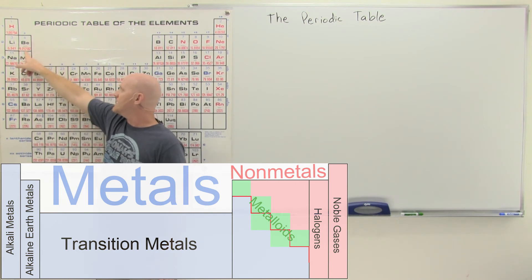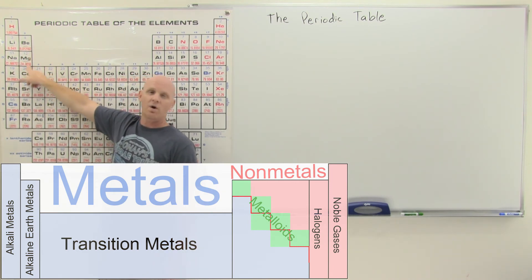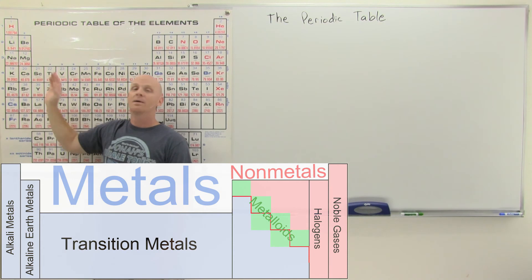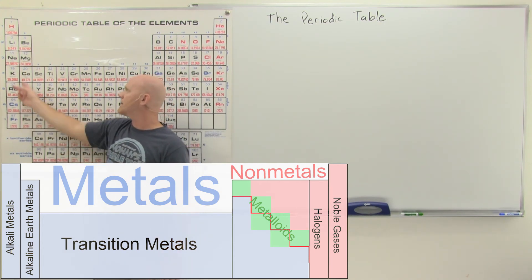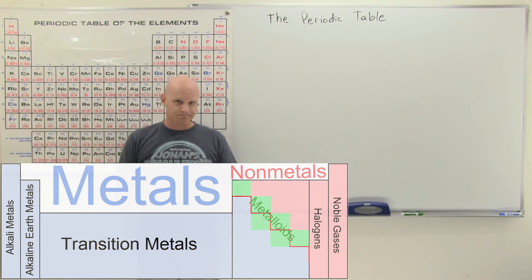Group two here, the next column over, these are also fairly reactive with water. Not quite as reactive as the alkaline metals, but they also form basic solutions. And so they call these the alkaline earth metals.